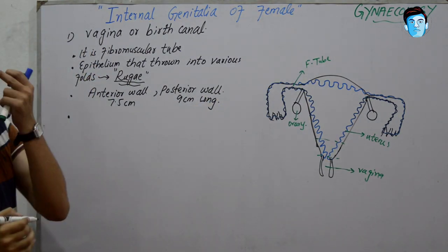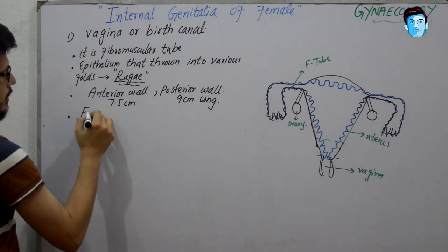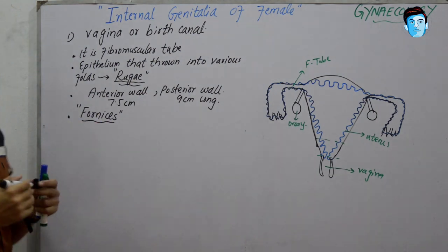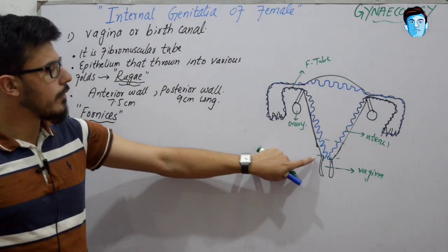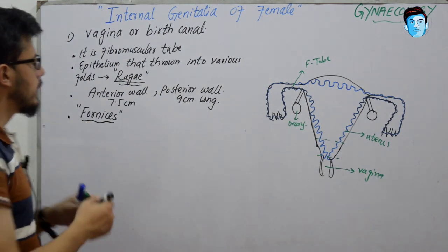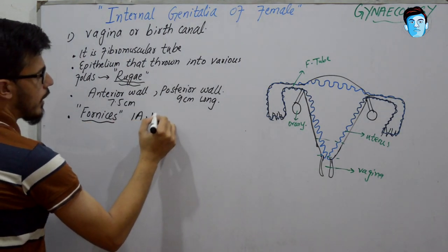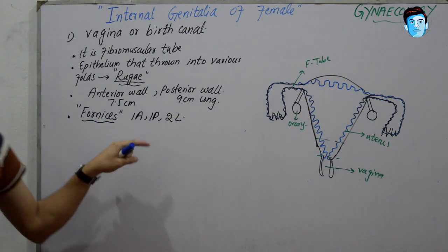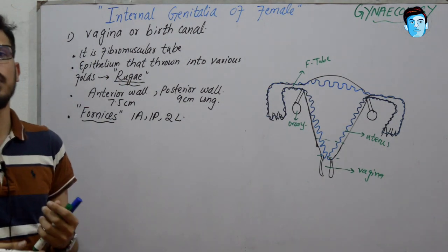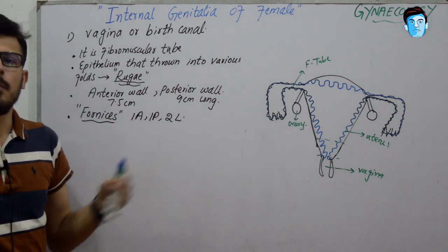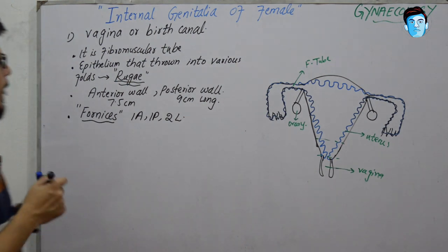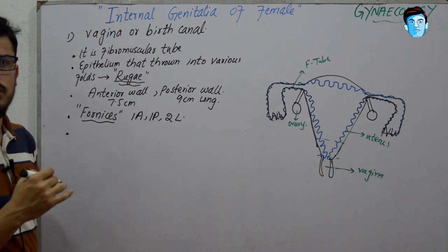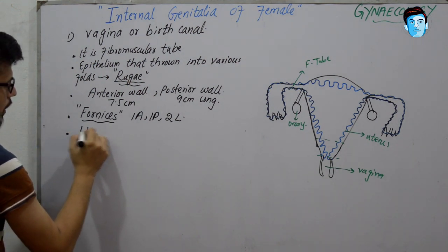Vagina has an important structure called the fornices. The fornices are hollow structures present between the anterior and posterior walls. There is one anterior, one posterior, and two lateral fornices. Out of all these, the posterior fornix is considered very important because of its close association with the pouch of Douglas. There is also a fold of mucous membrane at the entrance of the vagina called the hymen.